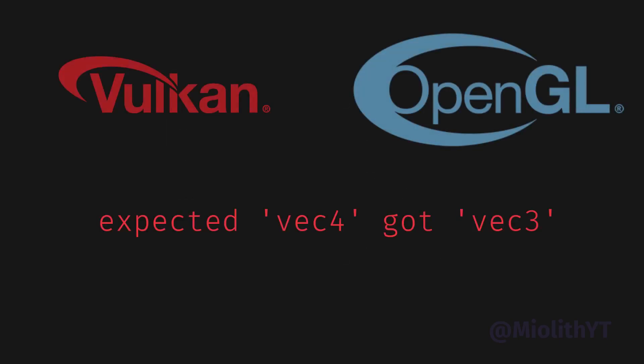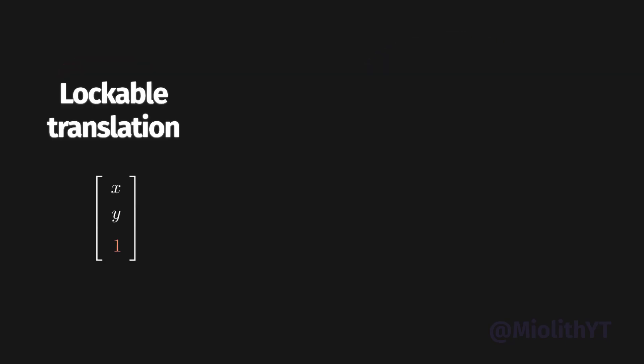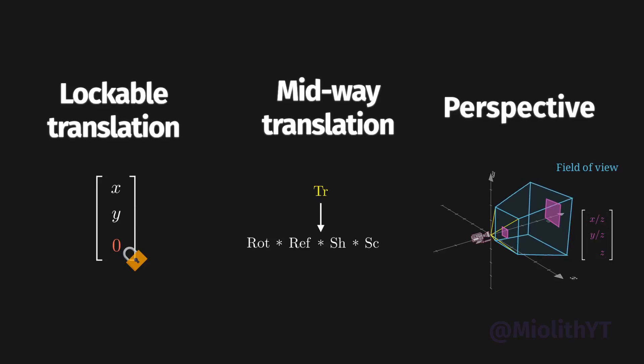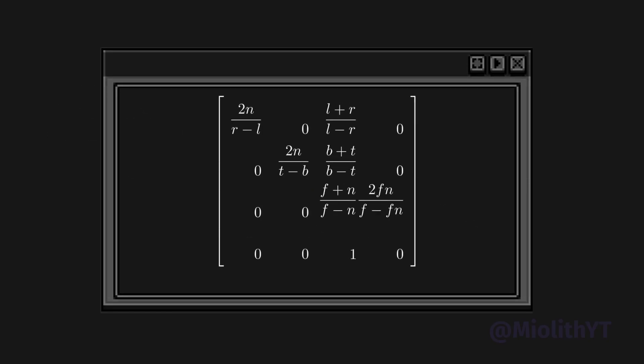Well, now you should have understood why Graphics API bother you with four-dimension vectors. This unlock three essential use cases. Lockable translation, midway translation, and self-division for perspective. Which gives us basically a trick to play with coordinate systems, all with the convenience of using only one matrix, which is why we call it homogeneous.